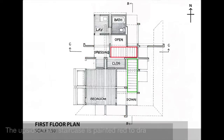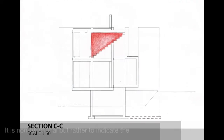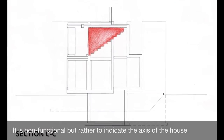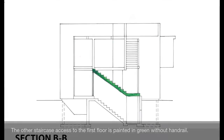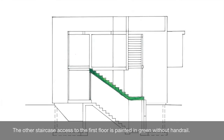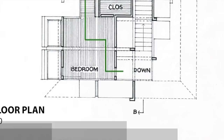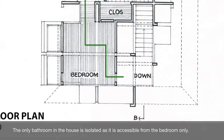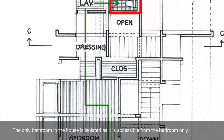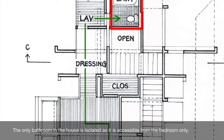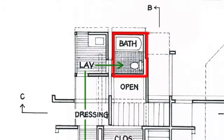The upside-down staircase is painted red to draw attention. It is non-functional but rather indicates the access of the house. The other staircase accessing the first floor is painted green without a handrail. The only bathroom in the house is isolated, as it is accessible from the bedroom only, making it extremely inconvenient for the occupants.